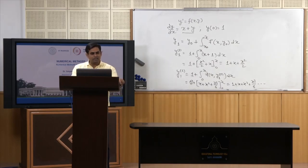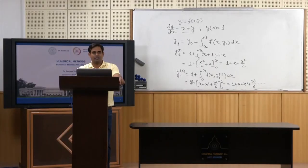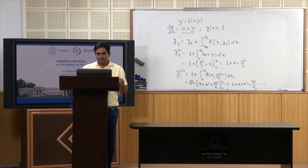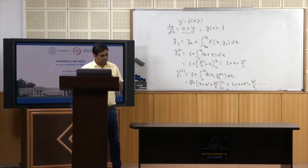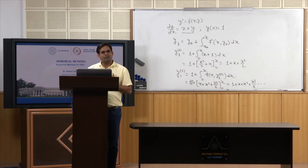Then I calculate y₃ = 1 + ∫[0 to x] f(x, y₂) dx, which gives 1 + x + x² + x³/3 + x⁴/24. When I put x = 0.1, y₃ comes to 1.110337, compared to 1.110167 in the second iteration — correct up to three decimal places. Taking one more iteration y₄ gives 1.1103417 at x = 0.1, correct to five decimal places: 1.11034. This was the semi-analytical method; now we will move to pure numerical methods.